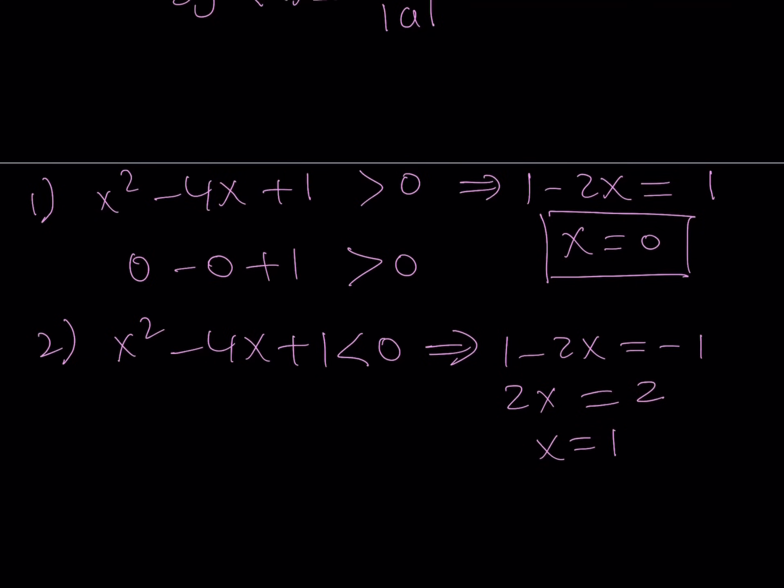Now, does this satisfy the original inequality? Let's check. If you replace x with 1, you get 1 minus 4 plus 1, which is equal to a negative number. So this is also satisfied, which means x equals 1 is also a valid solution. Great. So far, so good.